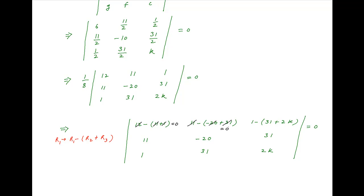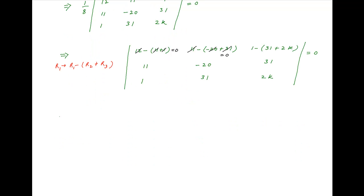The first and second elements in the first row are equal to 0, and therefore we get a determinant where the first row is (0, 0, −2k − 30), the second row is (11, −20, 31), and the third row is (1, 31, 2k), and this should be equal to 0.